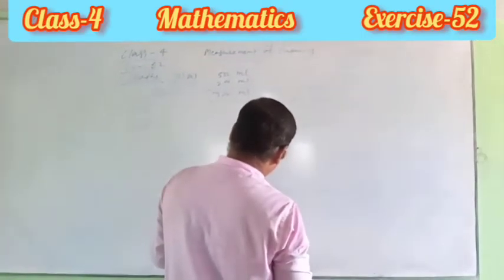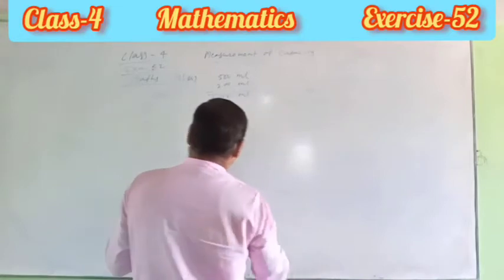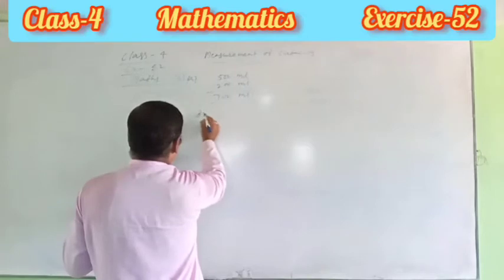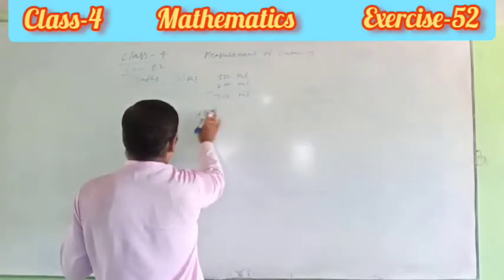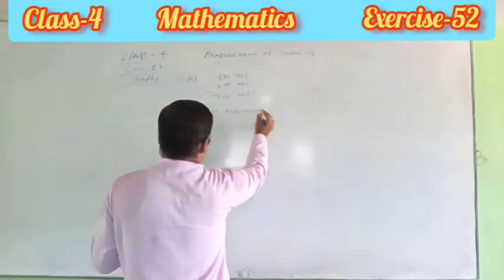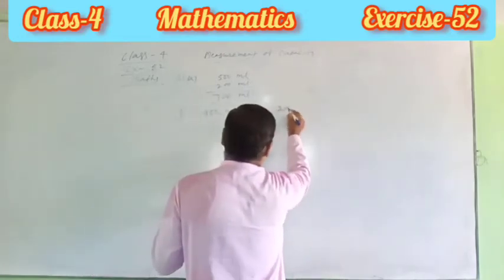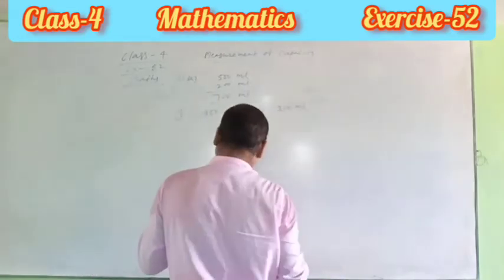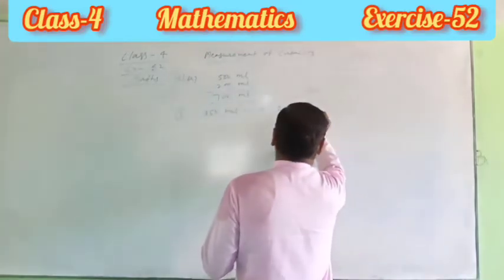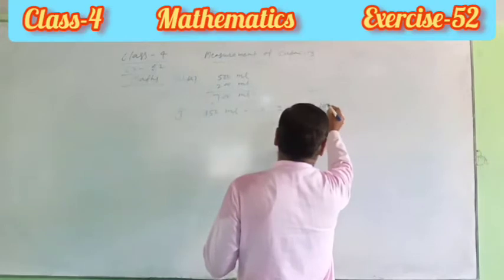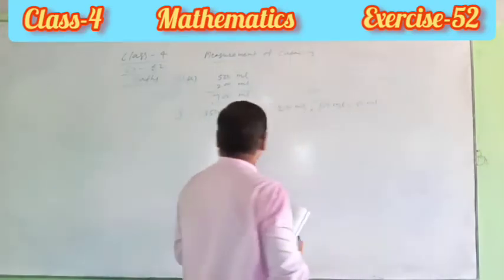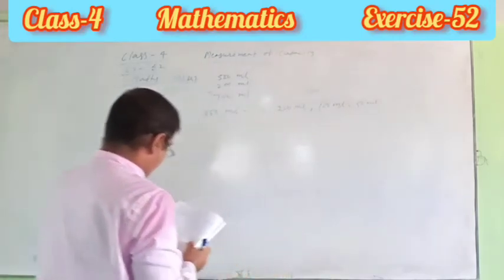350 ml milk. You write 350 ml. I measured by one 200 ml, one 100 ml, and one 50 ml. In this way you have created, 350 ml is prepared.